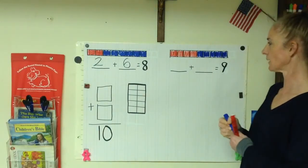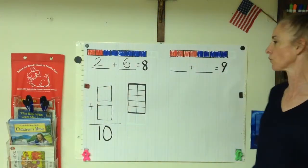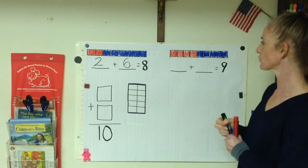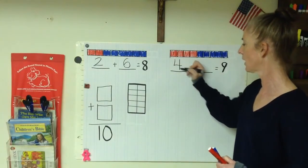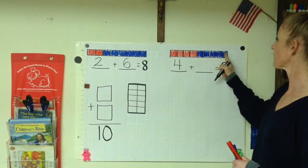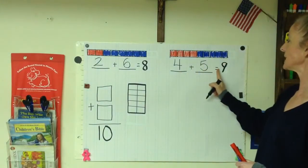Okay, I colored in all nine, so my sum is nine, but I need to know what my addends are. Let's count how many red. One, two, three, four. My first addend, then, is four. Plus, let's count how many blues. One, two, three, four, five. So four plus five equals nine.